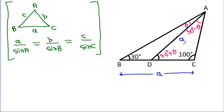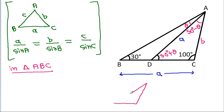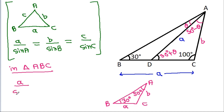And here, suppose AC is b. Then in triangle ABC, angle ABC is 30 degrees and angle ACB is 50 degrees. So applying the sine rule: a divided by b is equal to b divided by sin C.